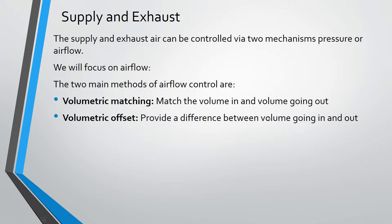You can also, on the flip side, have supply lower than exhaust. And that creates a negative scenario where you're pulling air from outside spaces in because you're exhausting more air than you're supplying in. And that air is going to come from somewhere. That would be somewhere like an infectious environment or somewhere where you don't want something in that space to leave and go to other spaces. So volumetric matching and volumetric offset, it's important to understand those two concepts.